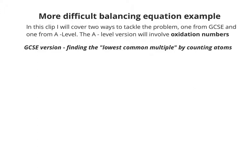So the GCSE version is basically using the lowest common multiple, counting the atoms on each side and then multiplying up accordingly until they match.